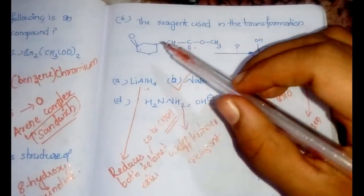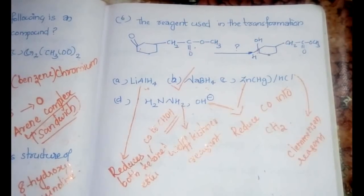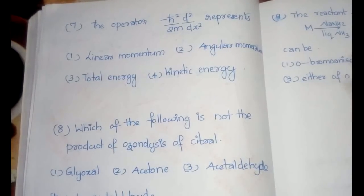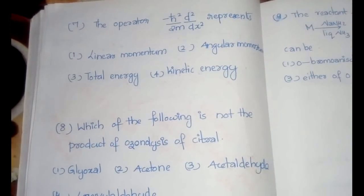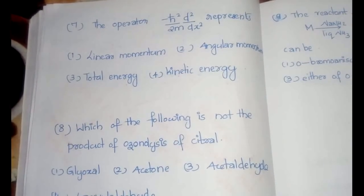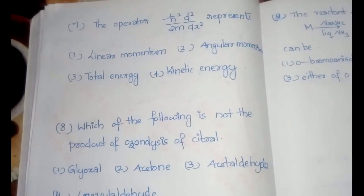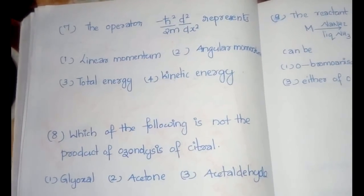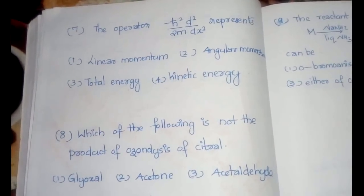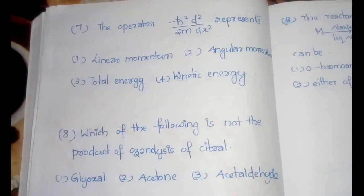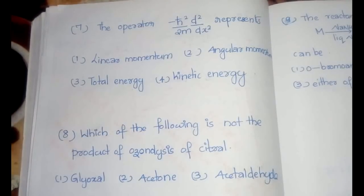This is a simple question from quantum mechanics — just the operator representation is asked. As I have said, in quantum mechanics the key topics are: energy of a particle in a one-dimensional box, different operator representations, and commutators. These three topics are extremely important and 99% of questions come from them.